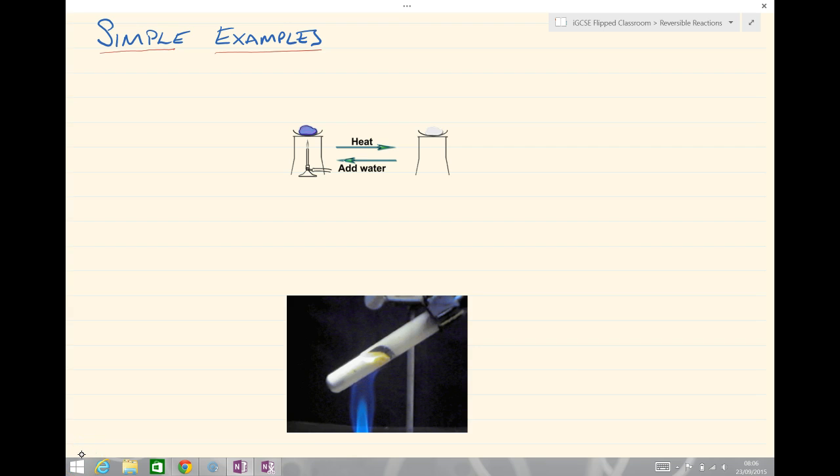Now let's have a look at some simple examples that we commonly come across in our IGCSE course of some simple reversible reactions. Number 1 here, we've got a blue substance in a container and that is going to be heated and that substance is going to turn white. And then if we go in the other direction, if we add water, that substance will turn blue. Perhaps you can guess what that is.